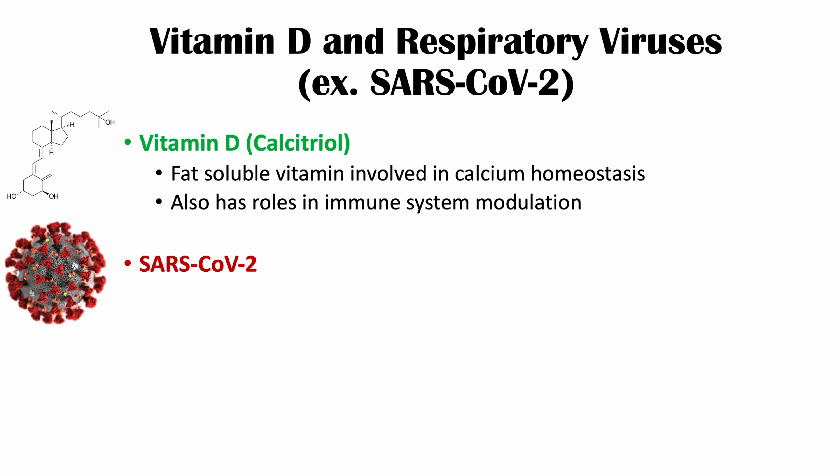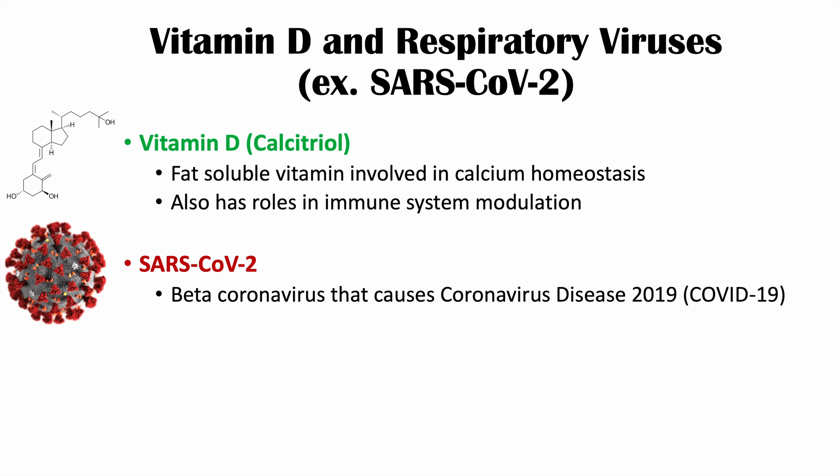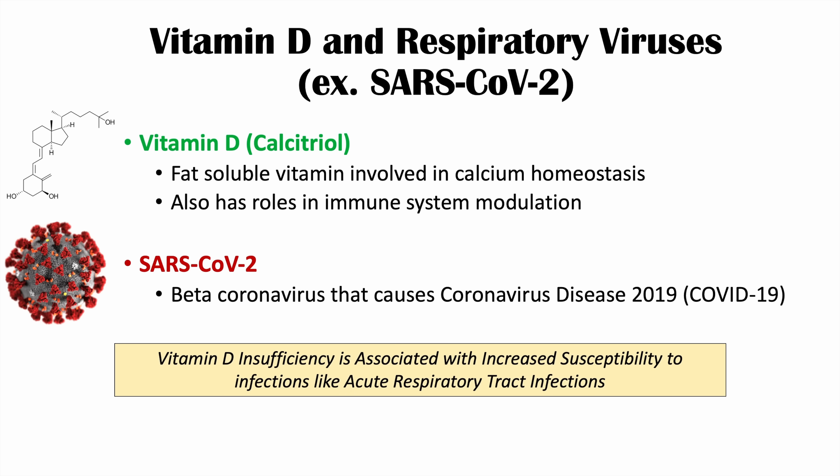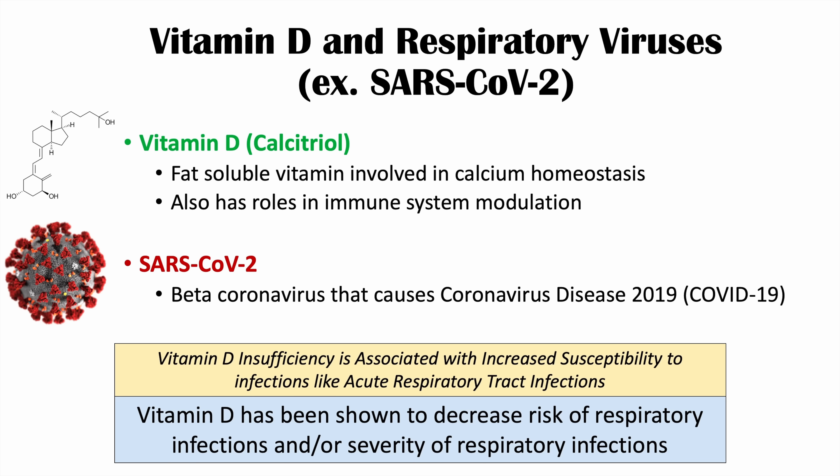SARS-CoV-2 is a beta coronavirus that causes coronavirus disease 2019, or COVID-19. The reasons for looking at vitamin D in SARS-CoV-2 infections is because vitamin D insufficiency or deficiency has been associated with increased susceptibility to infections like acute respiratory tract infections. And vitamin D has been shown to decrease the risk and/or severity of respiratory infections.